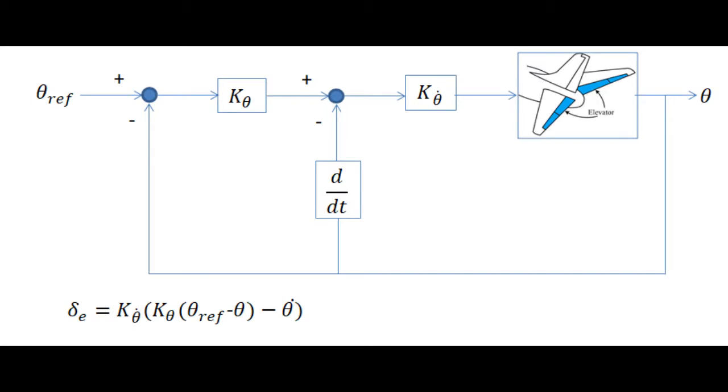The idea of the cascade architecture is to have an inner loop controlling the pitch rate and an outer loop controlling the pitch angle itself.